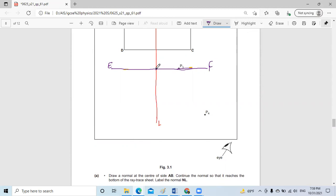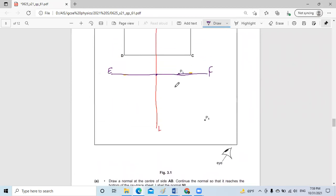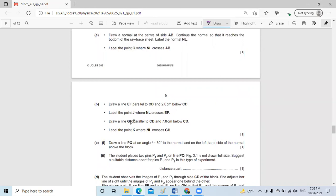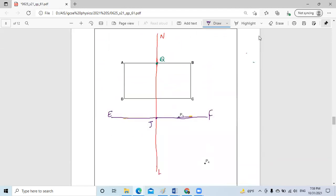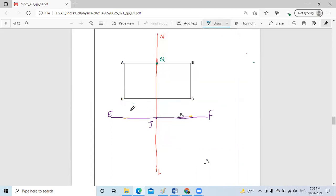Then they ask us to draw another line GH parallel to CD and seven centimeters below CD. So we bring our ruler again and measure seven centimeters below the CD. Seven centimeters, it will be something like this.